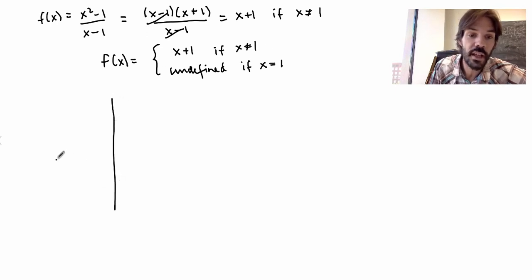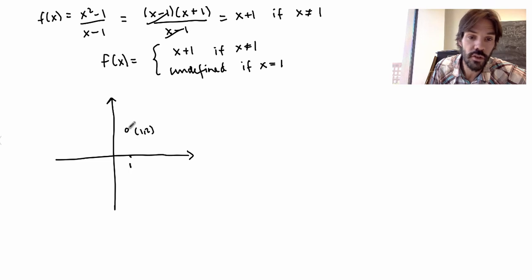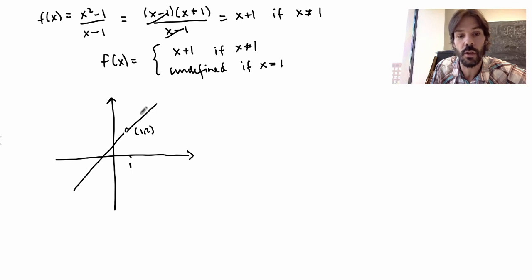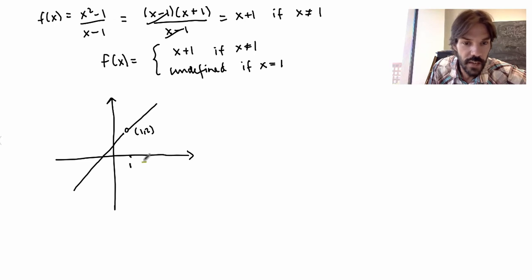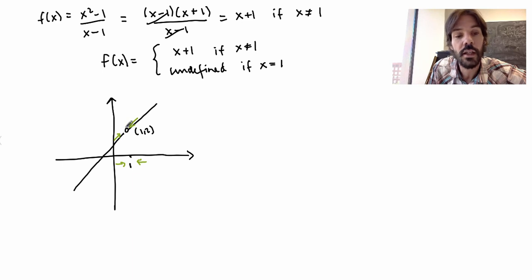What does this function look like? If I sketch it, it's really just a line — but there's a special point at x = 1 where the point (1, 2) is just a hole in the line. Away from that point my function is just x + 1, but it's not well defined at that point. Now we can understand what the limit means: if I take x to become close to 1 from either side, I see very clearly that f gets close to 2, even though f is not well defined at 1.